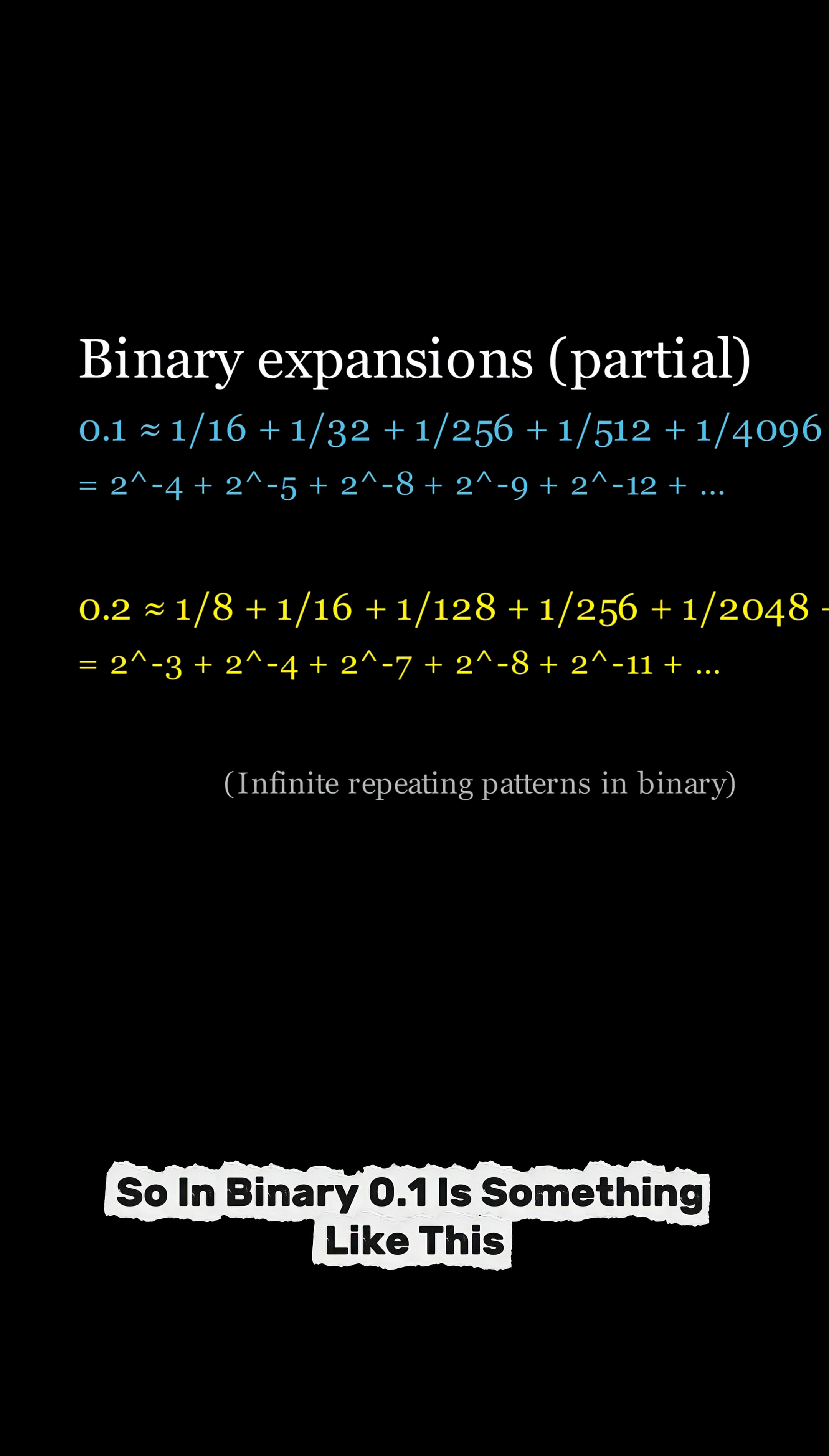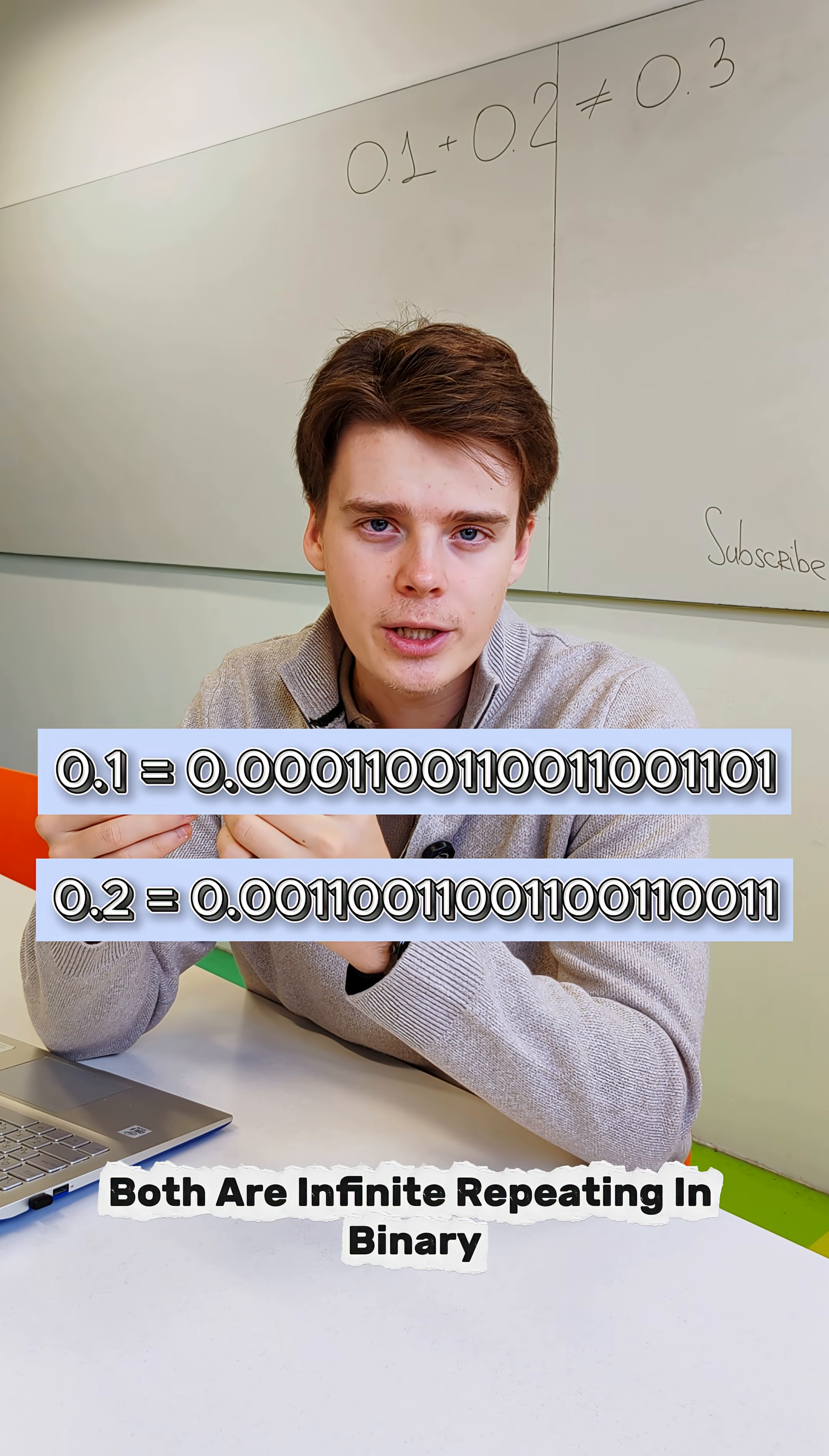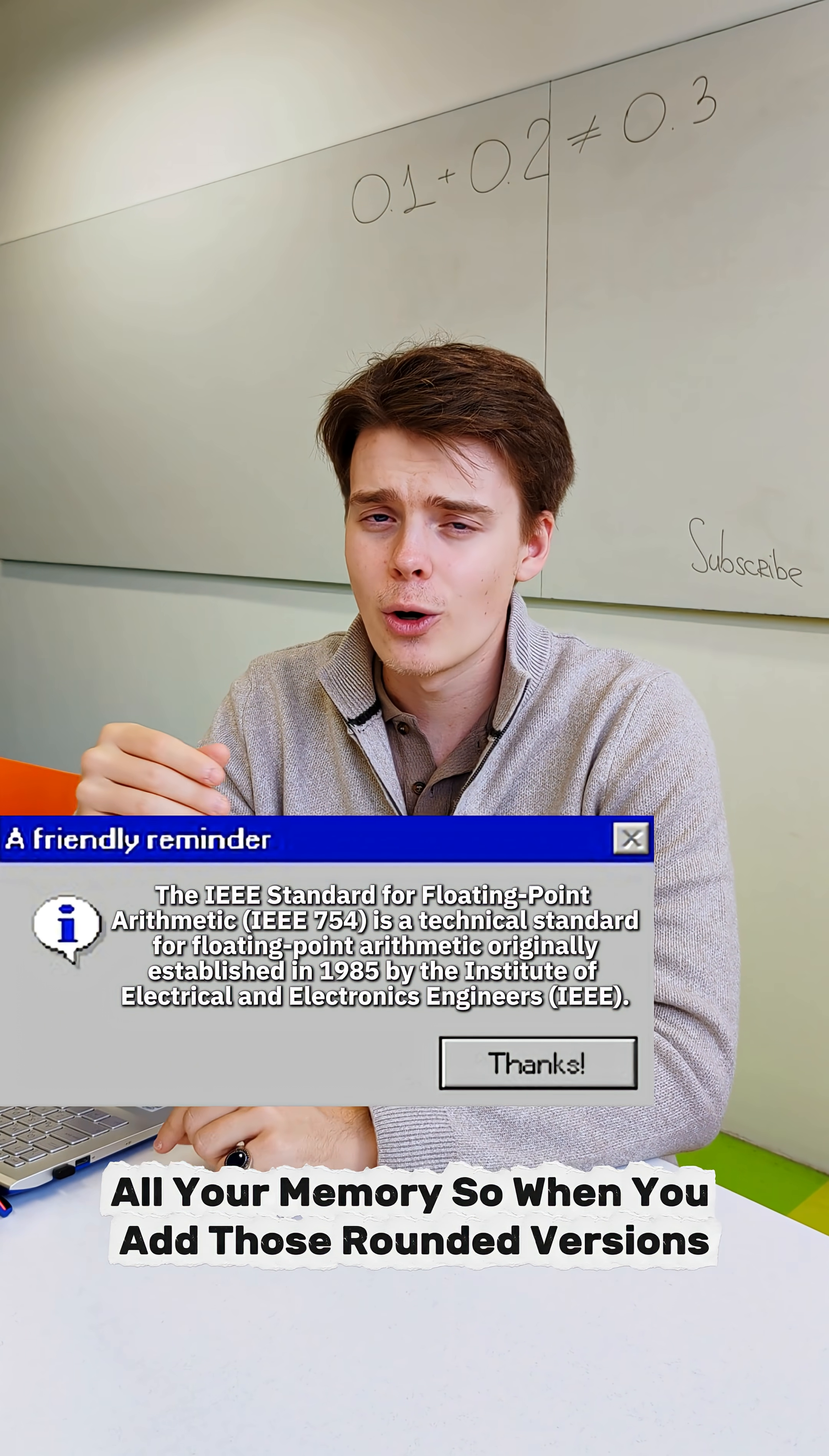So in binary, 0.1 is something like this, and 0.2 is something like this. Both are infinite repeating in binary. These go on forever. So the computer has to round them at some point, because storing all full infinite digits would take, well, all your memory.